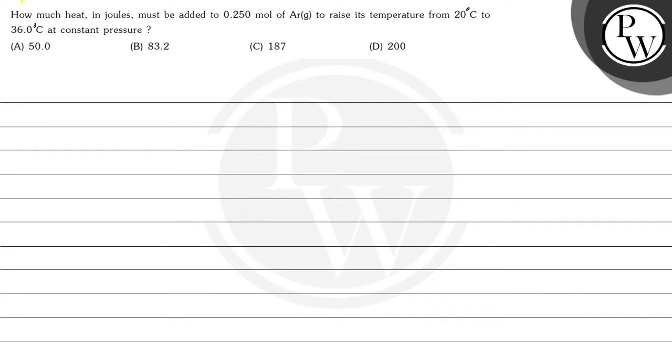Hello, let's read this question. How much heat in joules must be added to 0.250 mol of argon to raise its temperature from 20°C to 36°C at constant pressure? Options are 50, 83.2, 187, and 200.